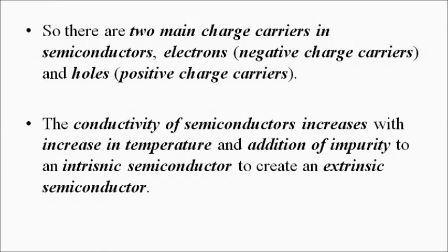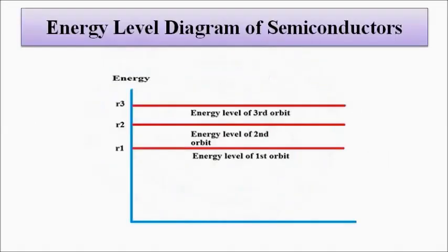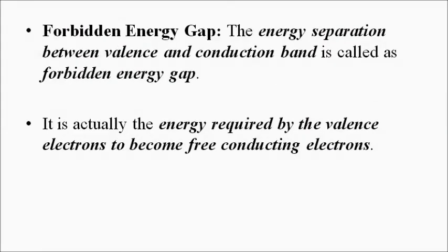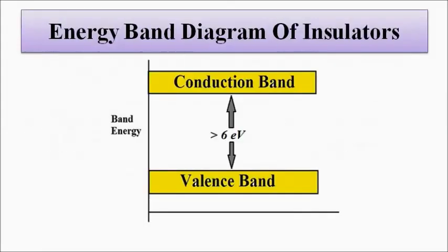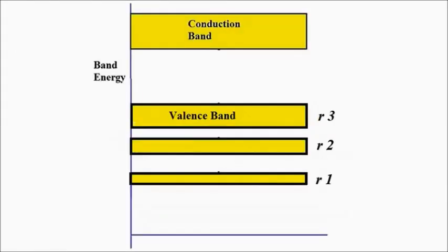I just wanted to make you understand the atomic structure of semiconductors, the energy level diagram, and the basic concepts related to valence band, conduction band, and forbidden energy gap, and their significance for semiconductors. I hope you like this video. Please subscribe to my channel, Engineering Tutorial, for more videos related to engineering, science, and technology. Have a great day, thank you very much.